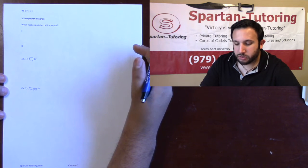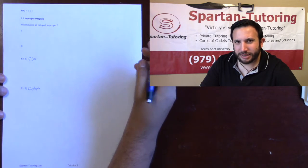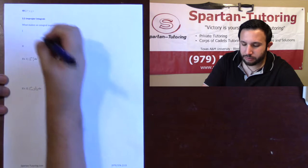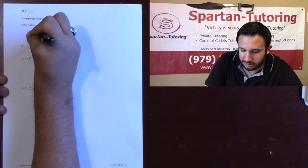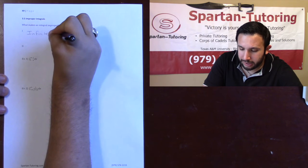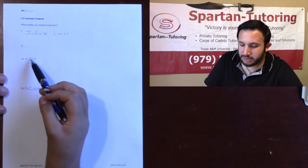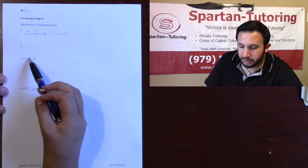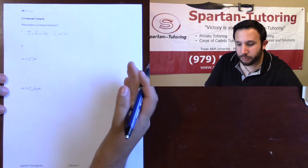The first thing we need to figure out is what makes an integral improper. The first thing that makes an integral improper is infinite limits. So an integral that has an infinite limit — like the integral from one to infinity — that is an example of an improper integral.